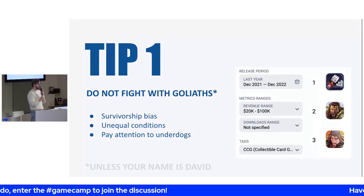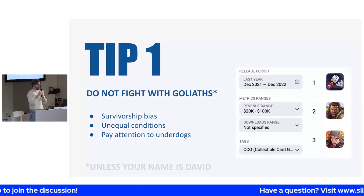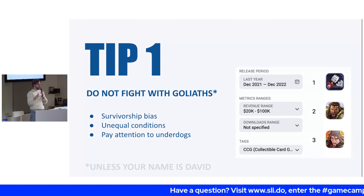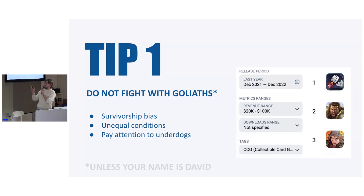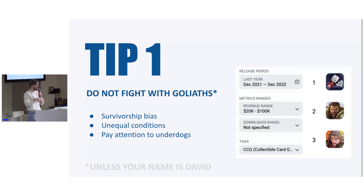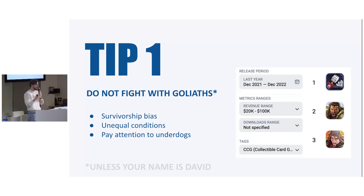Last but not least, pay attention to the underdogs. It's very important to know the best practices that can be taken from the top grossing games, but it's also sometimes very useful to find hidden gems. For that, we have a special instrument called advanced search that helps to search very specific things with a set of criteria. For example, we can look up games released during the last year in the collectible card games niche that acquired from $20,000 to $100,000. They were not very profitable, but still they found their audience — so maybe there are some features, game mechanics, or monetization systems that we can use.